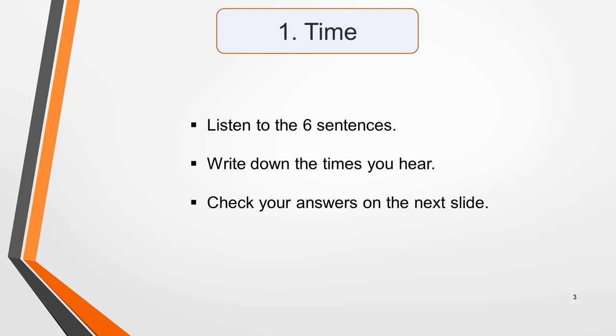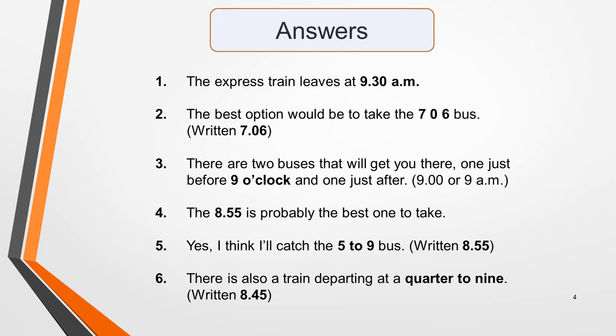Number one: The express train leaves at 9.30 a.m. Two: The best option would be to take the 706 bus. Three: There are two buses that will get you there — one just before 9 o'clock and one just after. Number four: The 8.55 is probably the best one to take. Number five: I think I'll catch the 5 to 9 bus. And number six: There is also a train departing at quarter to nine. Pause the video while you check your answers and analyze any mistakes you made.